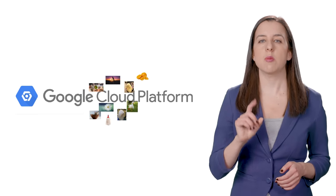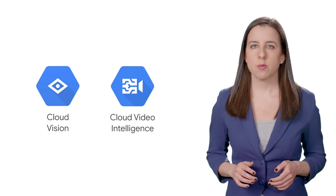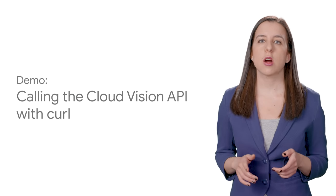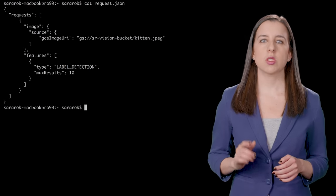With just one REST API request, we're able to access a powerful pre-trained model that gives us all sorts of metadata. Here's how easy it is to call the Cloud Vision API with curl. I'll send this image to the API, and here's the response we get back.